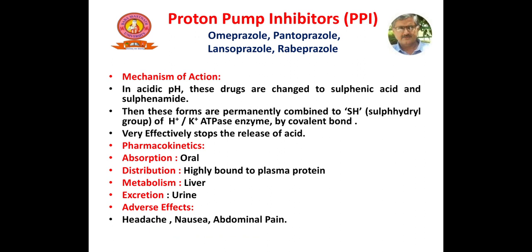Now let us look at the first category, the proton pump inhibitors. In acidic pH, these drugs are changed to sulphenic acid and sulphenamide. They then permanently combine with the sulfhydryl group present on the hydrogen-potassium ATPase enzyme via a covalent bond. They are very effective drugs and very effectively stop the release of acid. While histamine, gastrin, and acetylcholine all stimulate acid secretion, the proton pump inhibitors act at the last step — the actual acid release — making them very effective drugs.